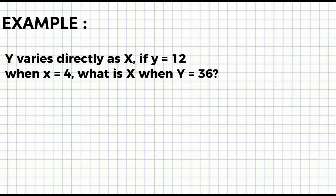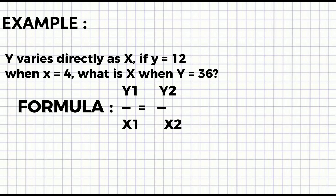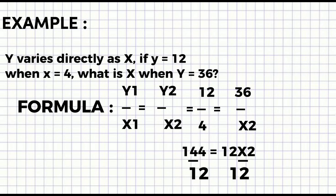So now, to get the other missing x, we'll just use the shortcut formula so we don't have to work too hard. The formula is y1/x1 = y2/x2. So it becomes 12/4 = 36/x2. Let's cross multiply. 4 times 36 equals 144, and 12 times x2 equals 12x2. Divide both sides by 12 and the answer is 12. x2 = 12.